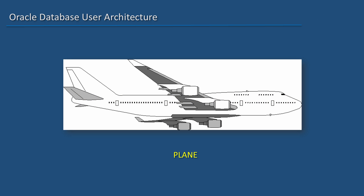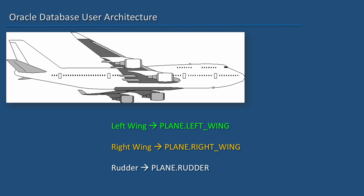Remember the flight example? Let us revisit it to learn about Oracle. Let me call this plane as, well, plane. All the parts of the plane belong to the plane. I can refer to its left wing as plane.leftwing, right wing as plane.rightwing, rudder as plane.rudder, and I can refer to its other parts too. It's kind of like the pattern owner.objectname.